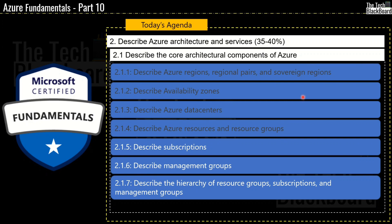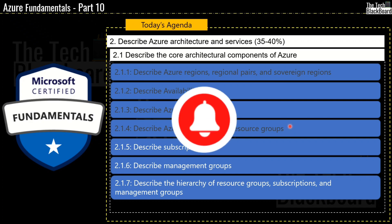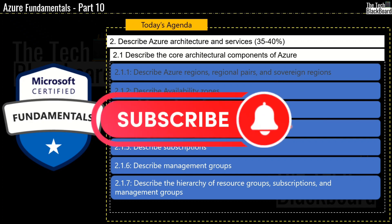In previous parts we have already covered Azure region, regional pairs, and sovereign region. We have also understood the concept of Azure availability zones, Azure data centers, and Azure resources and resource groups. I highly recommend you to watch all the previous parts to understand all the core components of Microsoft Azure. The links to all the previous parts are available in the description box. Please subscribe to the channel as more interesting topics on Microsoft Azure are coming up.